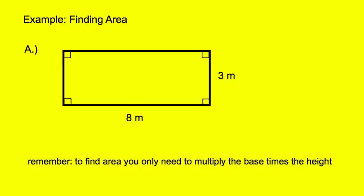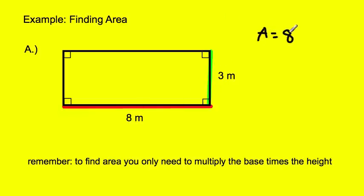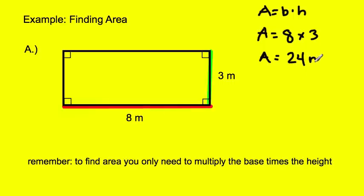Here's our first example. In figure A you see a rectangle. The base of this rectangle is eight meters and the height is three meters, so we multiply eight times three to get the area. Area equals eight times three — that's the base times the height — so area equals 24. They're labeled as meters, so it's 24 meters.